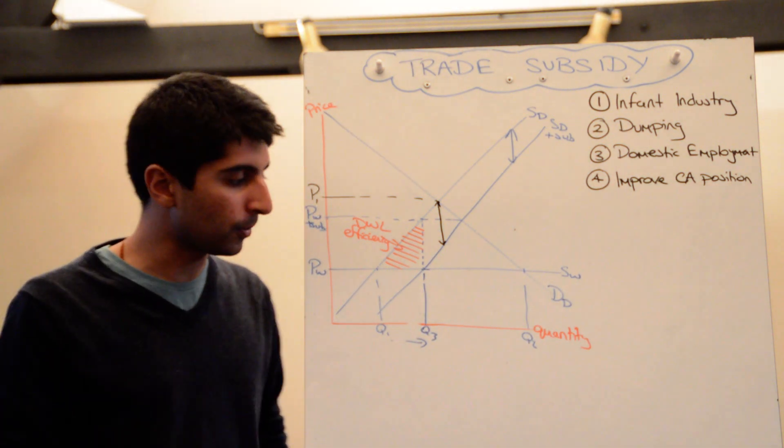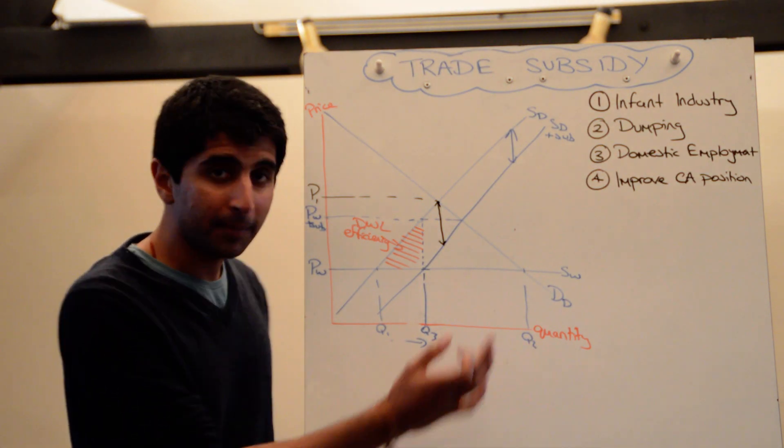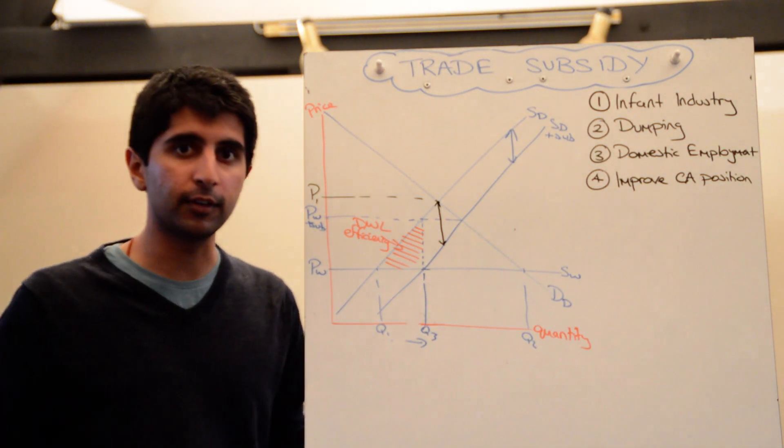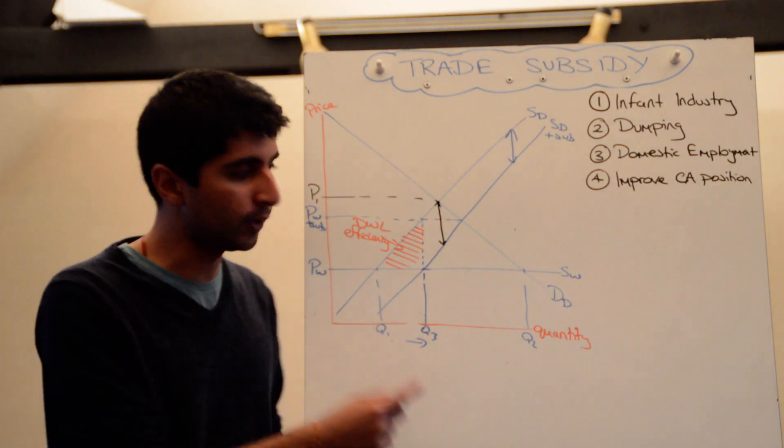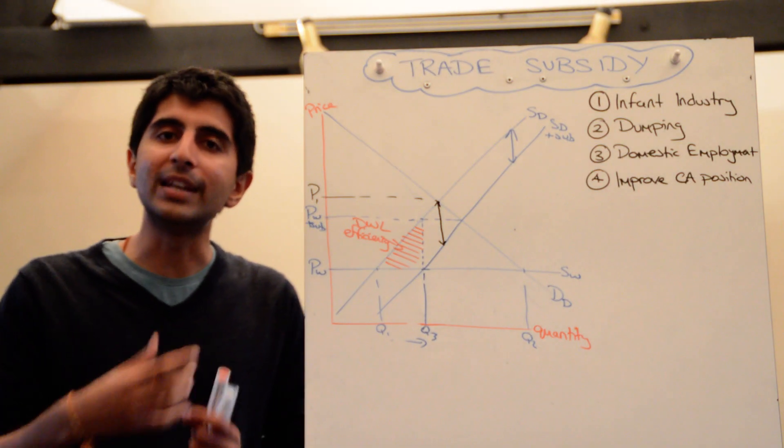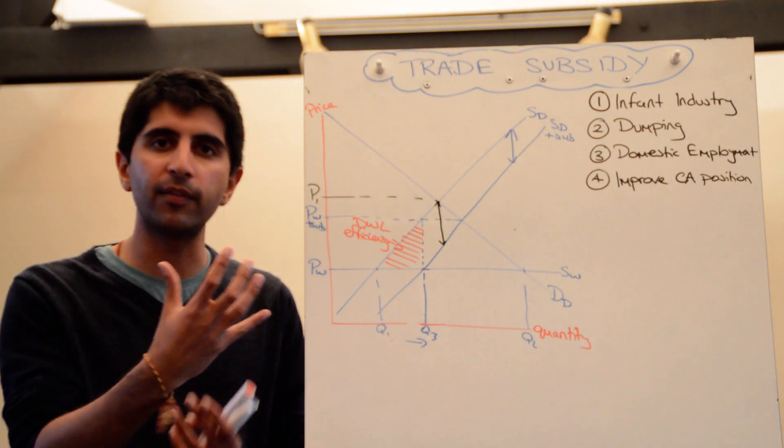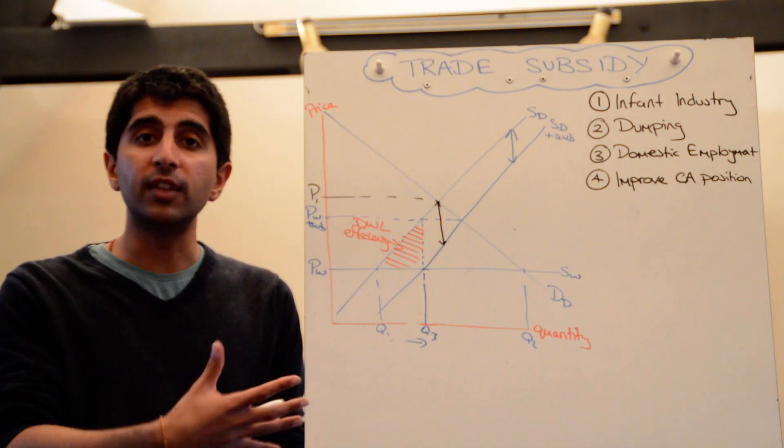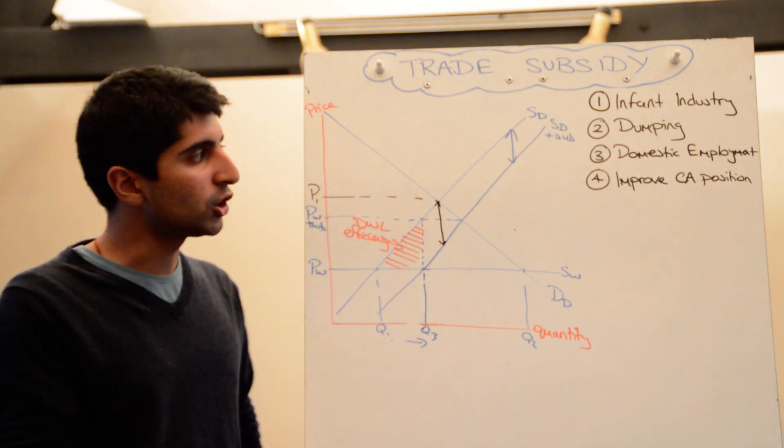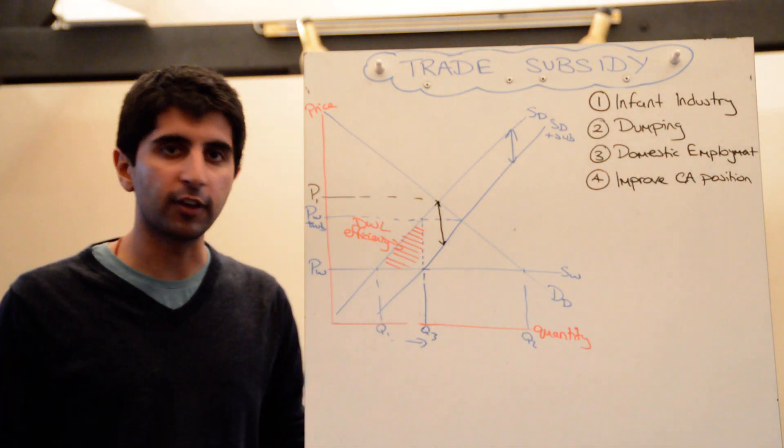Well, look what's happened to imports. Domestic supplies increased. Domestic demand is still the same, but the fact domestic supplies increased has reduced the need for imports from Q1 to Q2 to now only Q3 to Q2. So the need for imports, the quantity level of imports coming in has reduced, which in theory should reduce the expenditure on imports, which should improve our current account position.